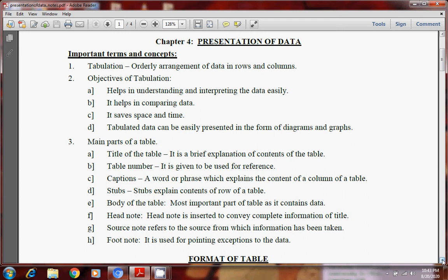And this tabulation means orderly arrangement of data in rows and columns. Now objectives of tabulation. Why do we do tabulation? What are the reasons behind it? So first one is it helps in understanding and interpreting the data easily. Dusra, it helps in comparing data. It saves space and time. Tabulated data can be easily presented in the form of diagrams and graphs.